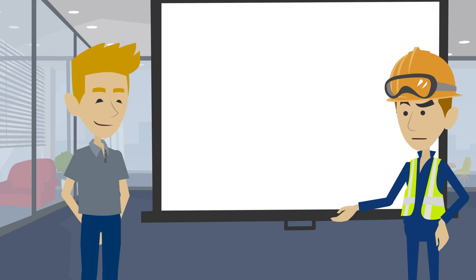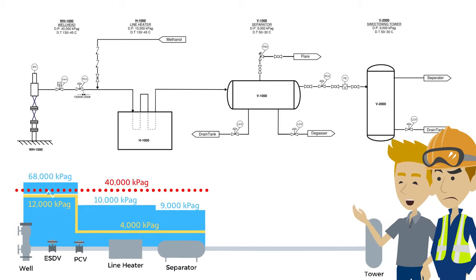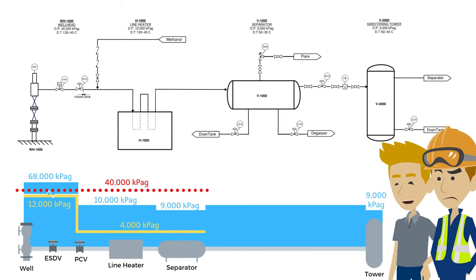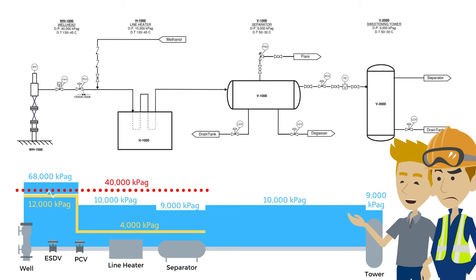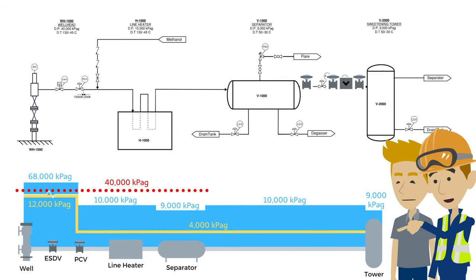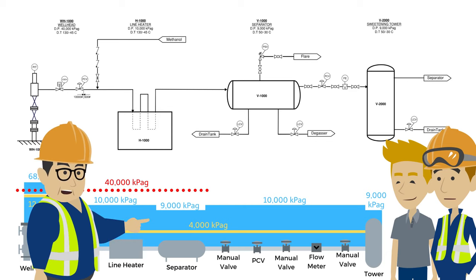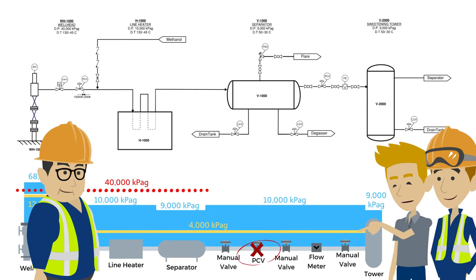How far downstream of the separator could the blocked flow be? The next major piece of equipment downstream is a sweetening tower, rated at 9,000 kPaG — the same as the separator. There are no spec breaks between the two, and their connecting piping is 600 lb with an MOP of around 10,000 kPaG. If the blockage were downstream of the sweetening tower, the tower pressure would have increased as well. Therefore, we know the blocked flow was between the separator and the tower. There are three manual valves, a flow meter, and a pressure control valve between the two. The manual valves were all open when checked after the event, and the flow meter was removed and found clean. That means the pressure control valve was the element that failed closed.